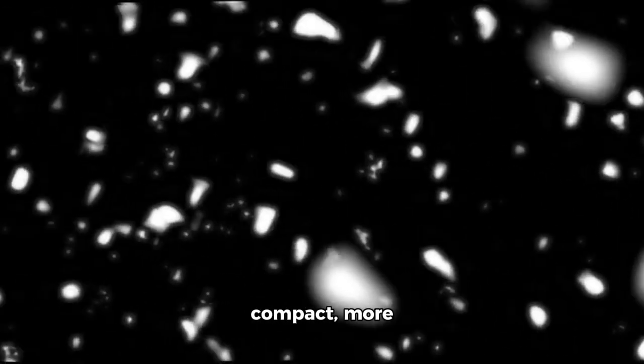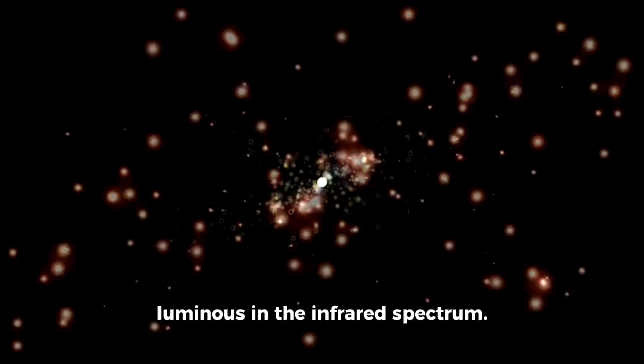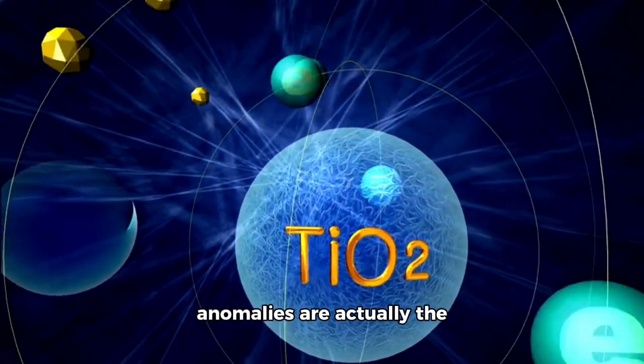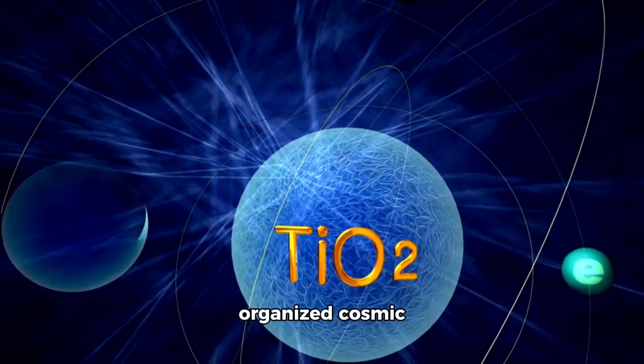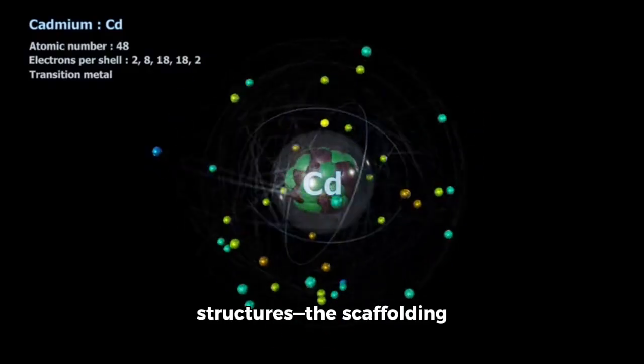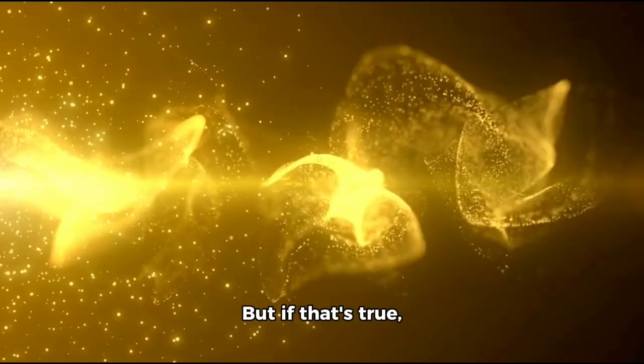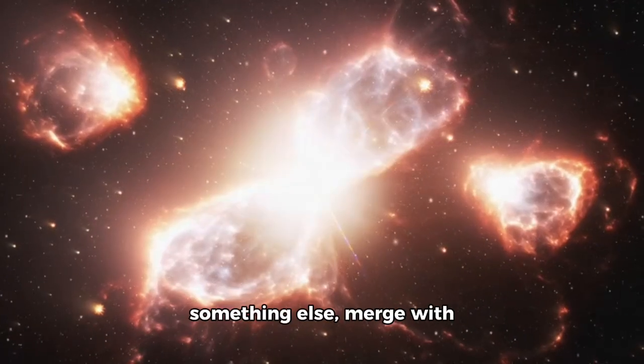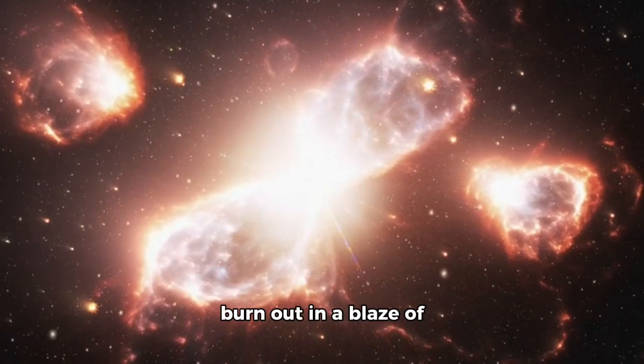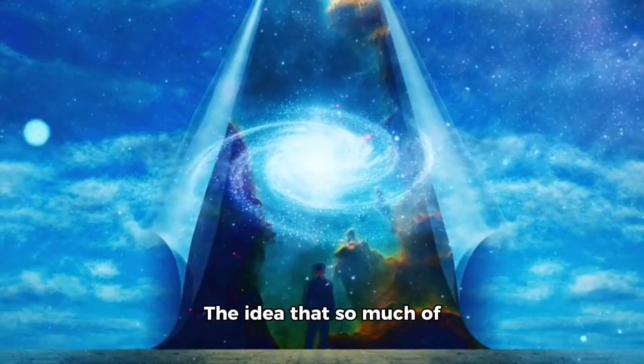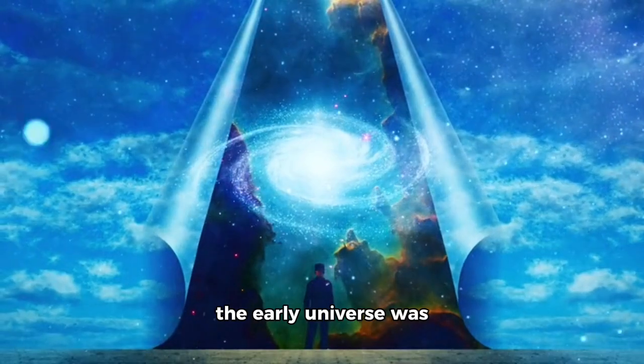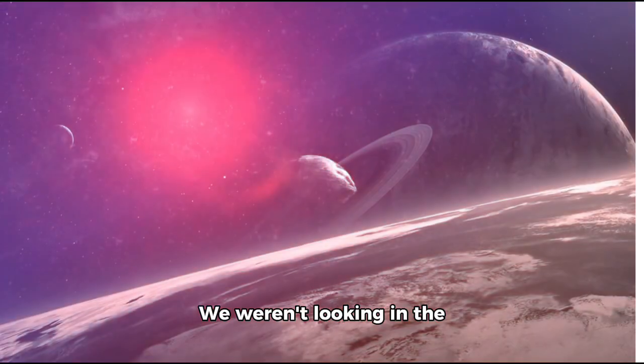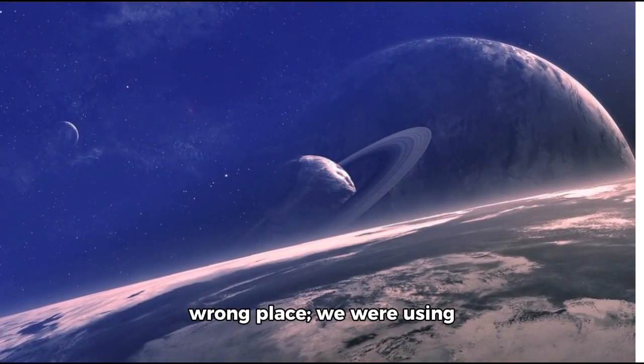This has led some to theorize that these anomalies are actually the first generation of organized cosmic structures—the scaffolding upon which galaxies were later built. But if that's true, why do we not see their offspring today? Did they evolve into something else, merge with early galaxies, or simply burn out in a blaze of physics-defying glory? The idea that so much of the early universe was invisible until now has been deeply unsettling and profoundly humbling. We weren't looking in the wrong place, we were using the incorrect eyes.